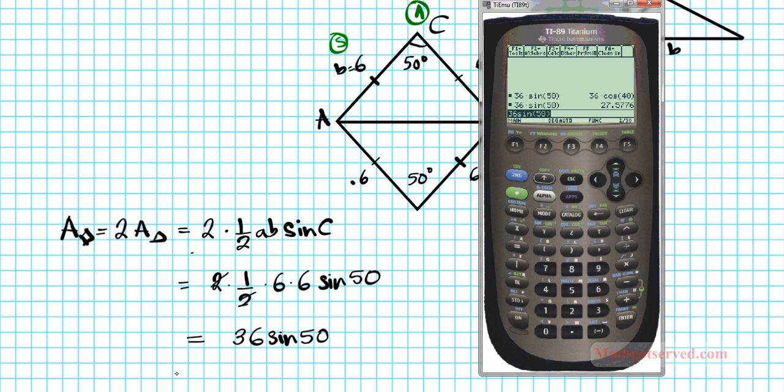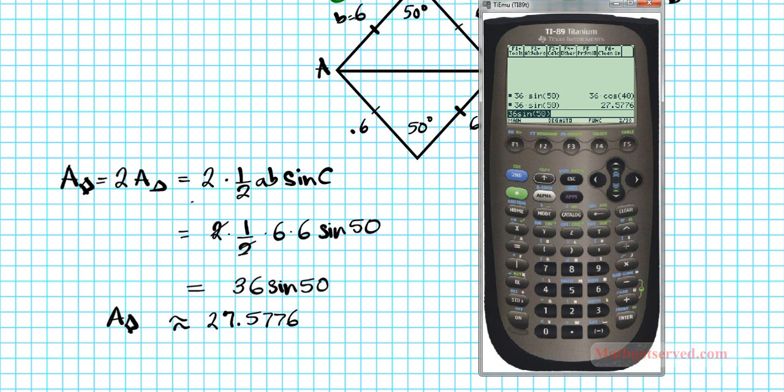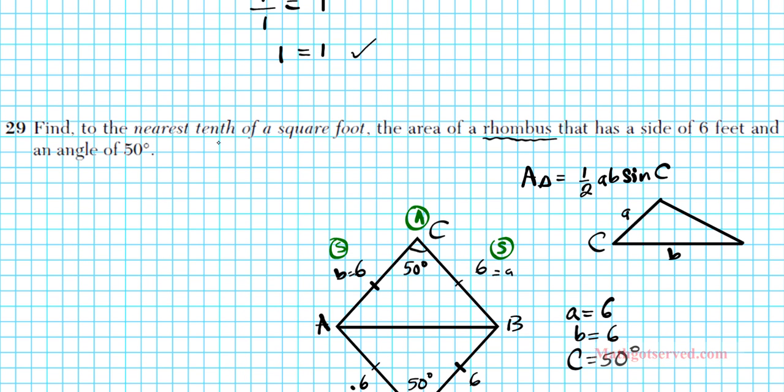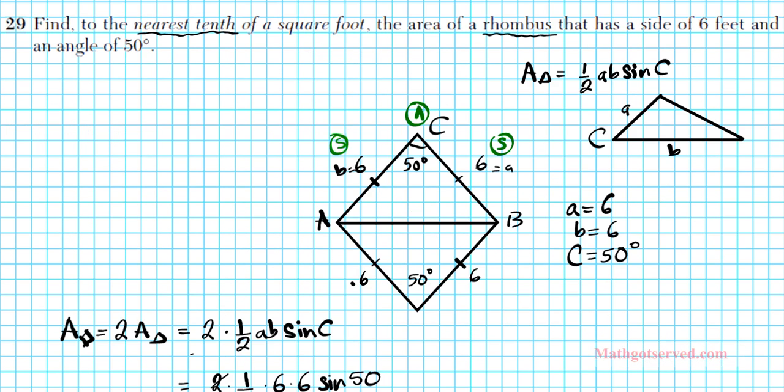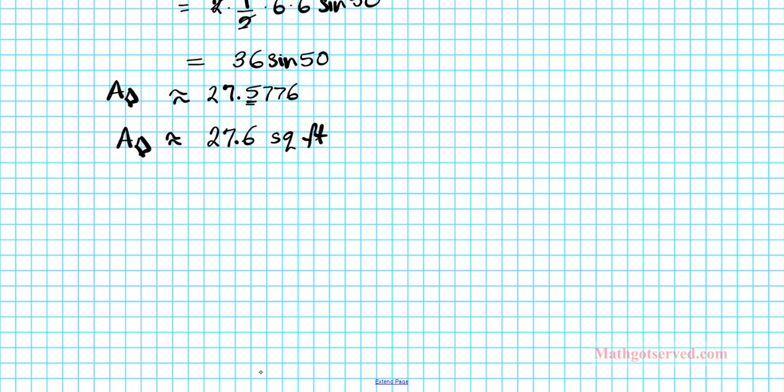The area of the rhombus is approximately 27.5776. But let's go back to the question for a second. The question says we need to round it to the nearest tenth. The tenth is the digit right behind the decimal point. So to the nearest tenth, the area of the rhombus is approximately 27.6 square feet. Now let's move on to the last problem in this installment.